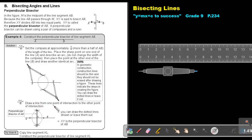Draw a line from one point of intersection to the other point of intersection there. The perpendicular bisector of AB. There's the line. You can draw the dotted lines or leave them out. XY is the perpendicular bisector of AB.